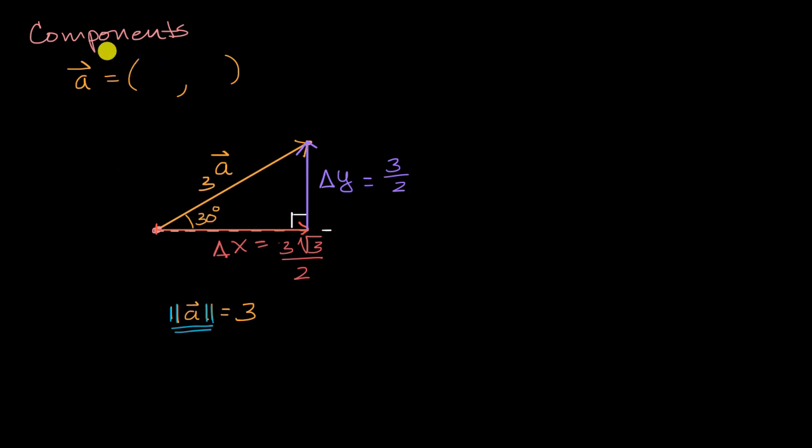And so up here, we would write our X component is three times the square root of three over two. And we would write that the Y component is three halves.